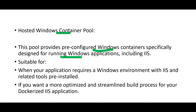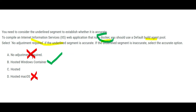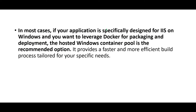We know clearly this is specific to a Windows application. When should we use it? First, if it requires a Windows environment — and we know it does because IIS is there. Second, if you want a more optimized build process for your Dockerized IIS application. Is our IIS application Dockerized? Yes, it runs Docker. So in most cases, if your application is designed for IIS on Windows and you want to leverage Docker for packaging, use Windows container.